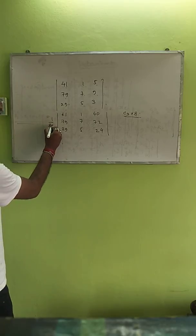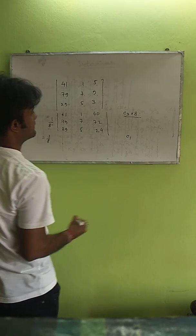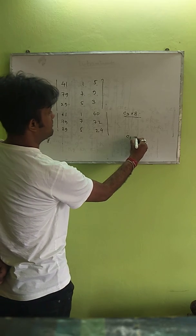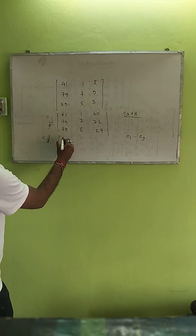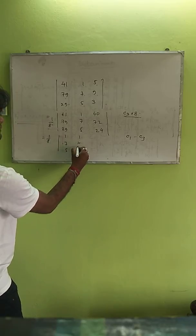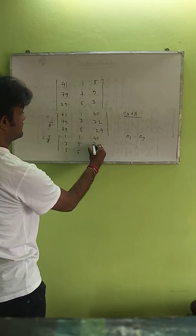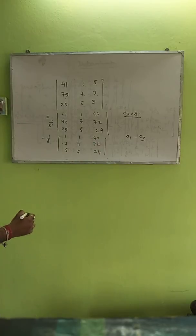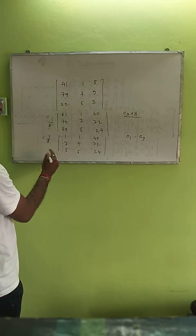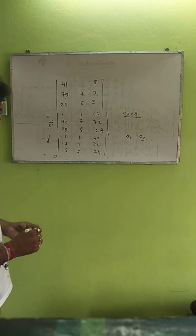Now, if we subtract C3 from C1 — that is C1 minus C3 — we see that the second column and third column are identical, so the value of the determinant will be 0.